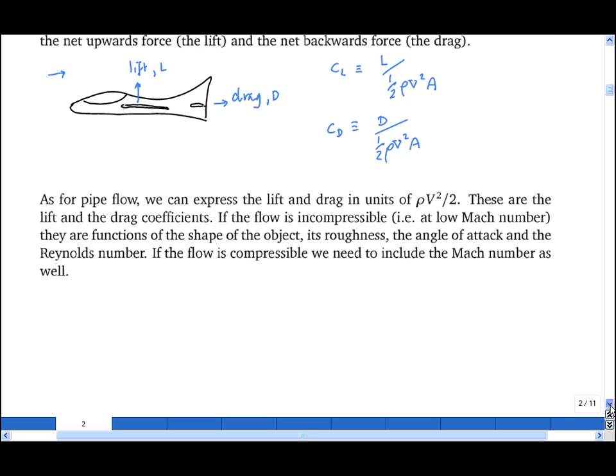And typically, these coefficients, such as CL and CD, depend on properties of the flow, such as the Mach number if it's a compressible flow, i.e. a high speed flow, the Reynolds number, the angle of attack, and features such as surface roughness.